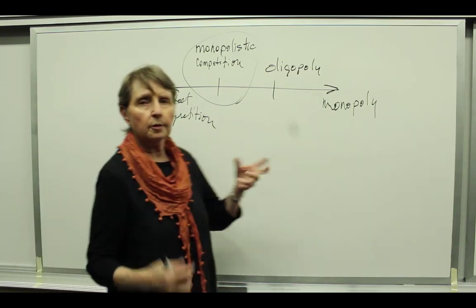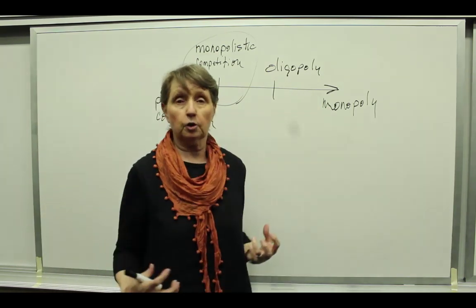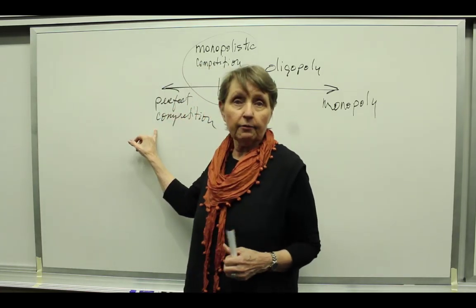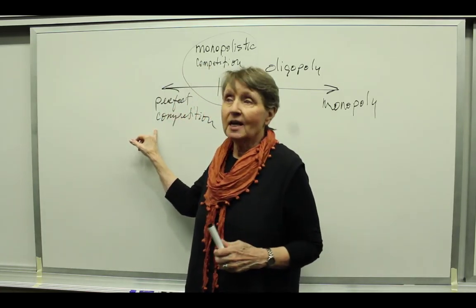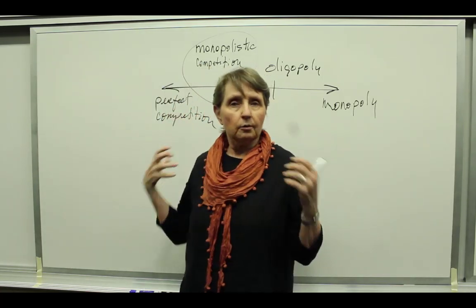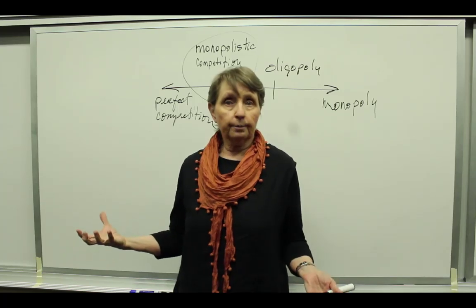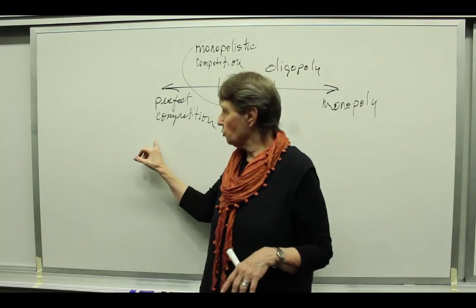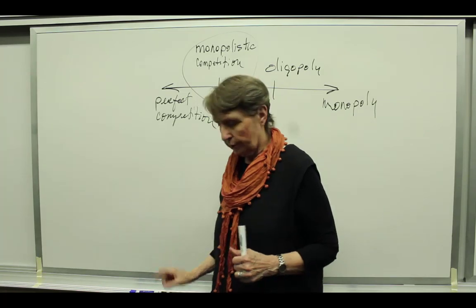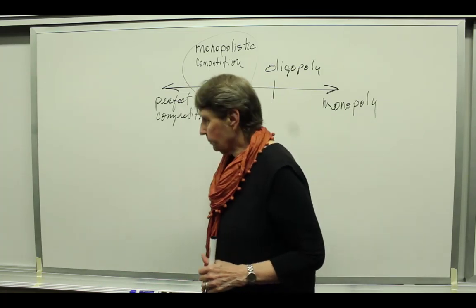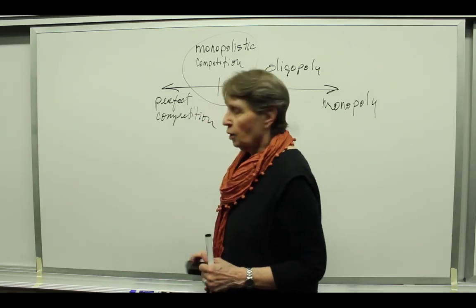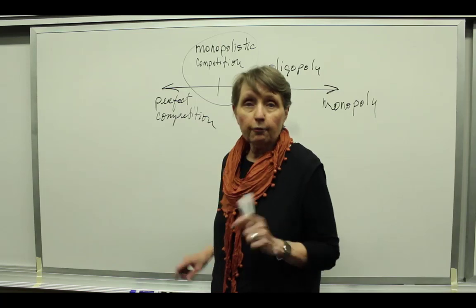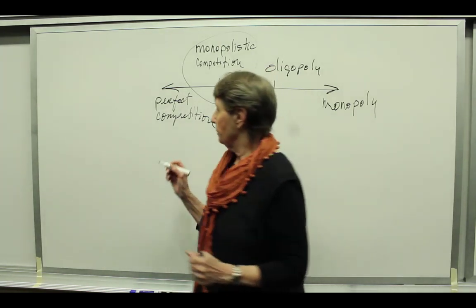Down at this end of the spectrum is something we call perfect competition, and the best example we have in America of perfect competition is agriculture. We'll use the U.S. agriculture industry as an example of perfect competition. Now, for an industry to be perfectly competitive, there are four criteria that must be met.